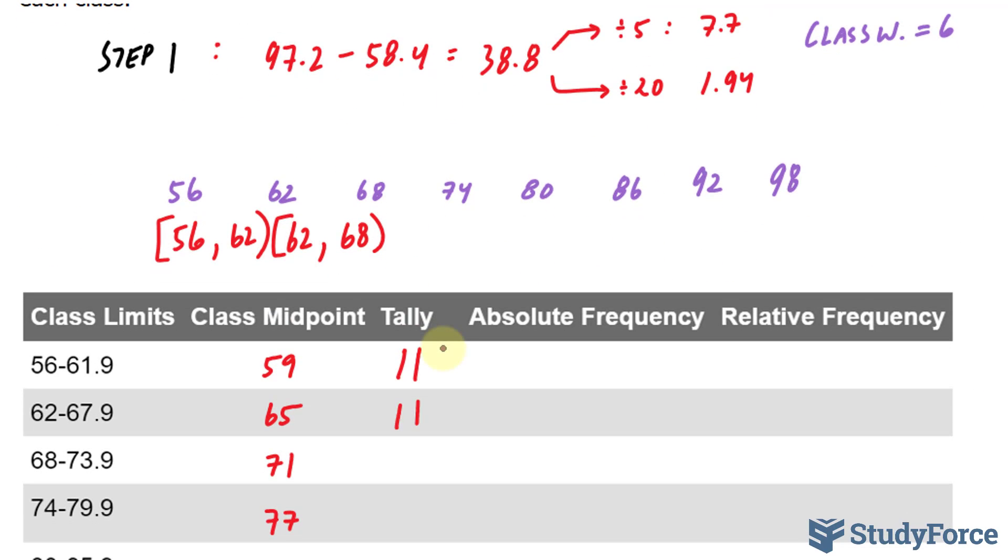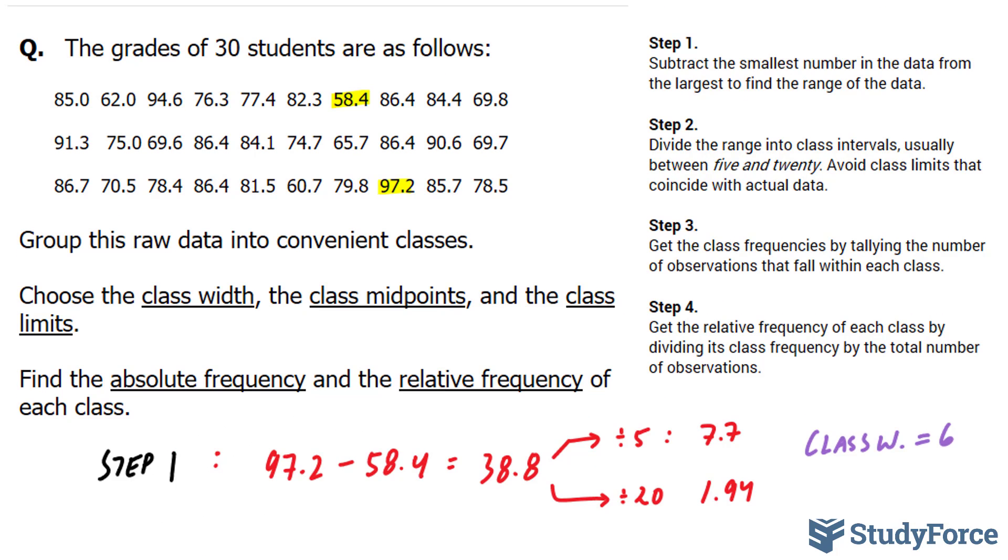And let's do one more for good measure. Between 68 and 73.9. Between 68, there's one, there's another, there's another, and there's the last one. That's four.